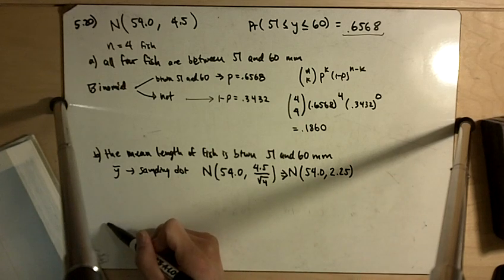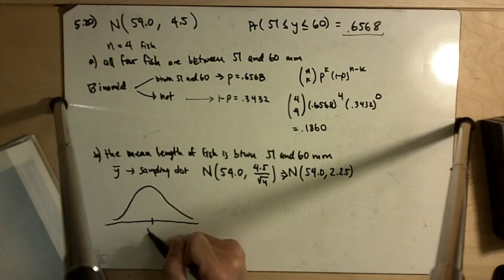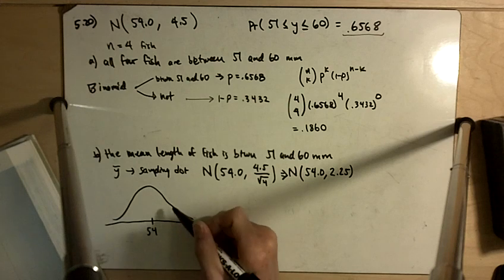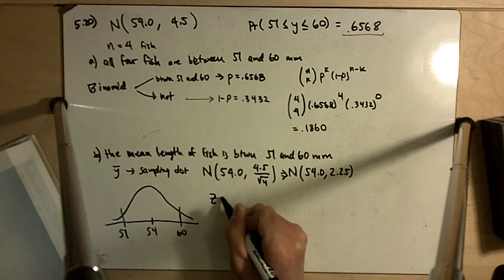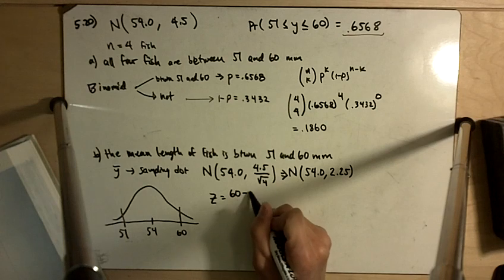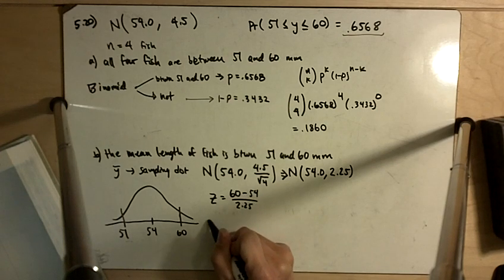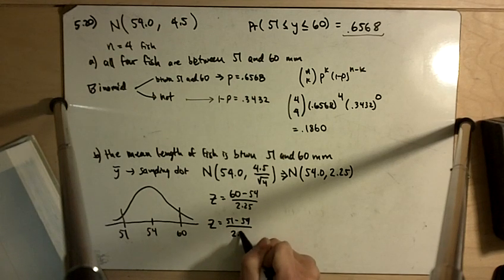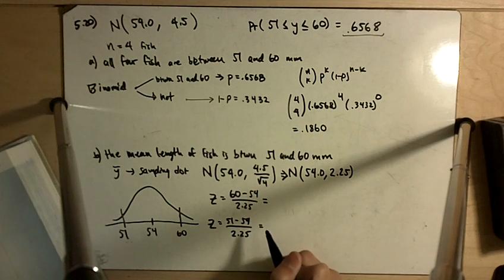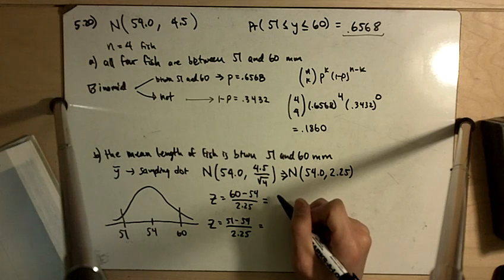And so now we're looking for the probability that it's, if we're centered at 54, what is the probability that it's going to be between 60 and 51? And so the z on the 60 side is going to be 60 minus 54 divided by 2.25. And the z on the lower side is going to be 51 minus 54 divided by 2.25. This z ends up being positive 2.67.